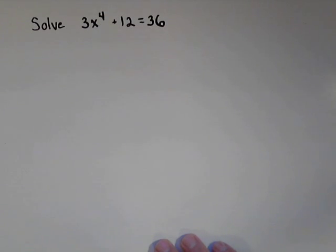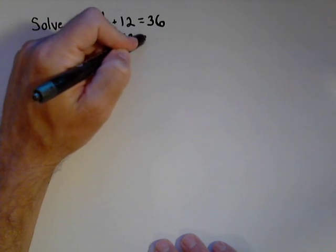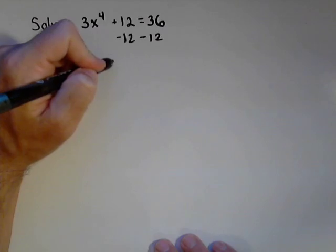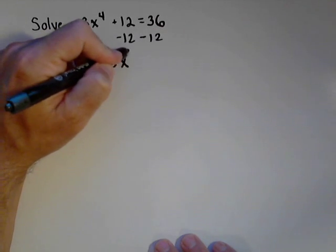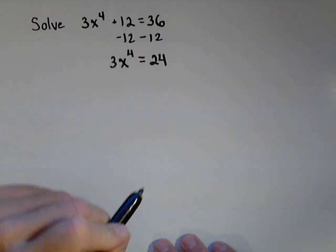So we'll solve this like we would any regular equation. We'll start by subtracting 12 off of both sides, and we get 3x to the fourth equals 24.